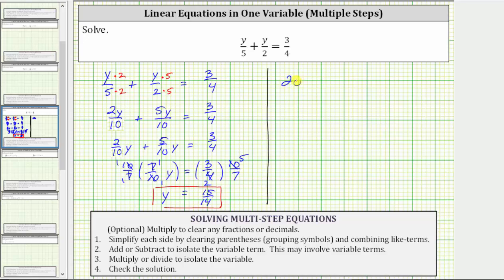This would give us 20 times y over 5 plus y over 2 equals 20 times 3 fourths. Let's go ahead and show the distribution here. We'd have 20 times y over 5 plus 20 times y over 2 equals 20 times 3 fourths. And let's write 20 as a fraction with a denominator of 1.